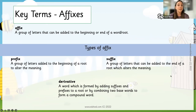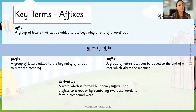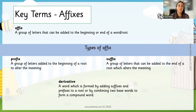Affixes are a group of letters that can be added to the beginning or end of a word or root word. Types of affix include a prefix — letters added to the beginning of a root word to change the meaning — and a suffix, which we add to the end to change the meaning. There's also something called a derivative, which is more of a teacher term: a word formed by adding suffixes and prefixes to a root or combining two base words to form a compound word. Children probably don't need to know this one.